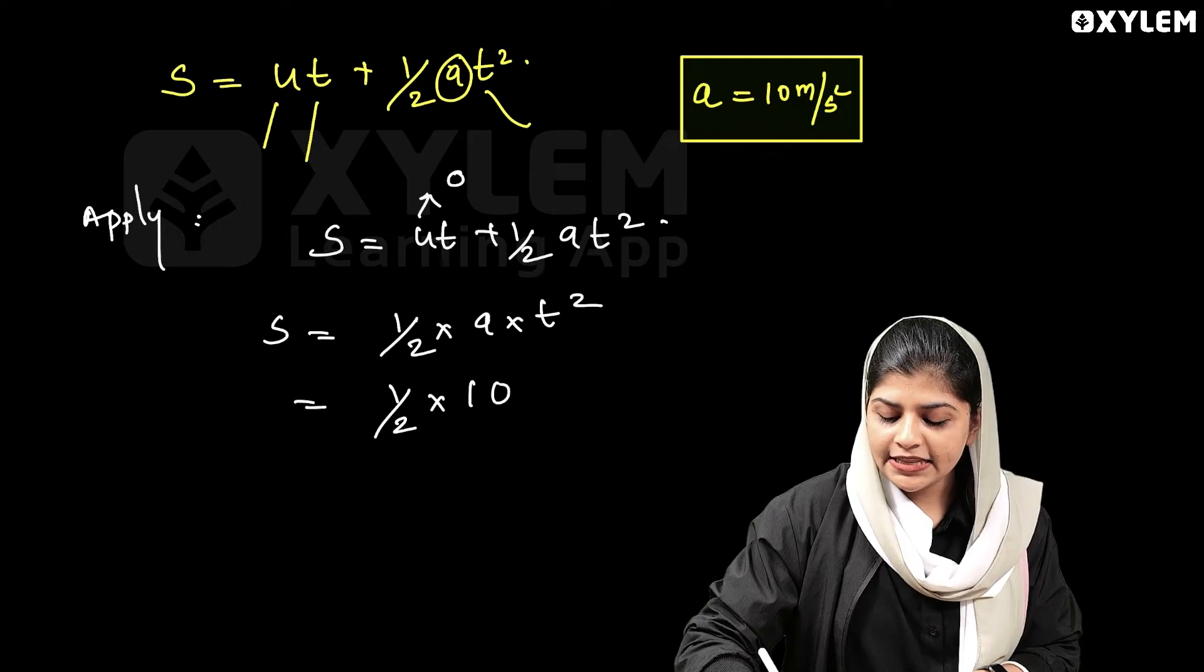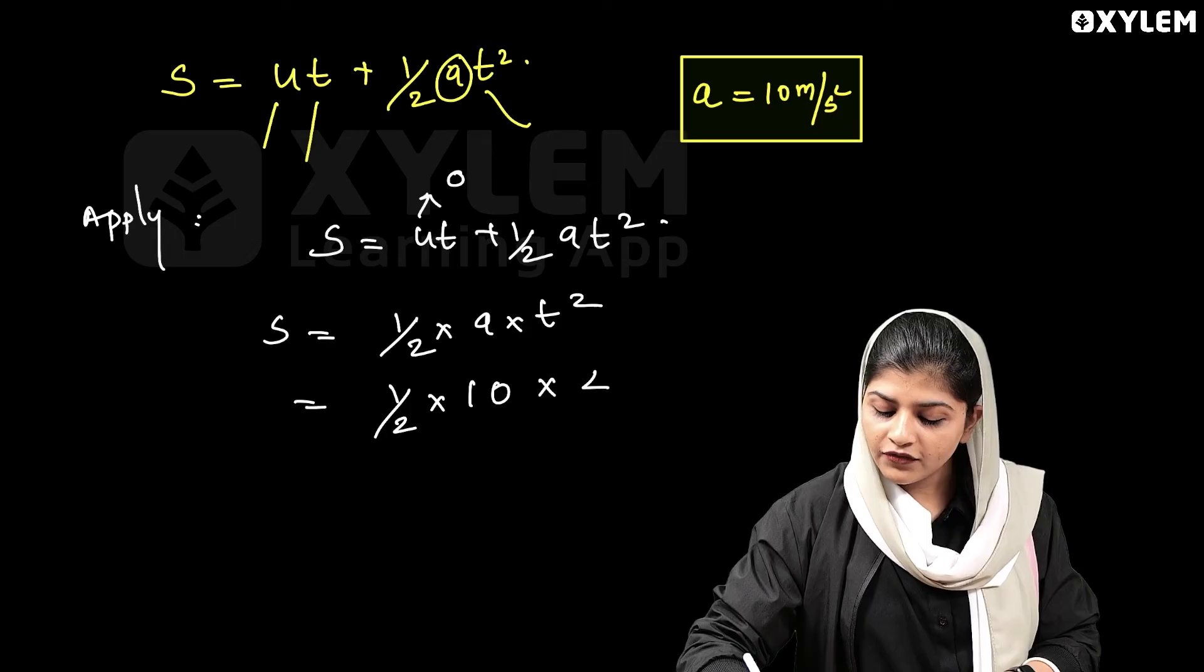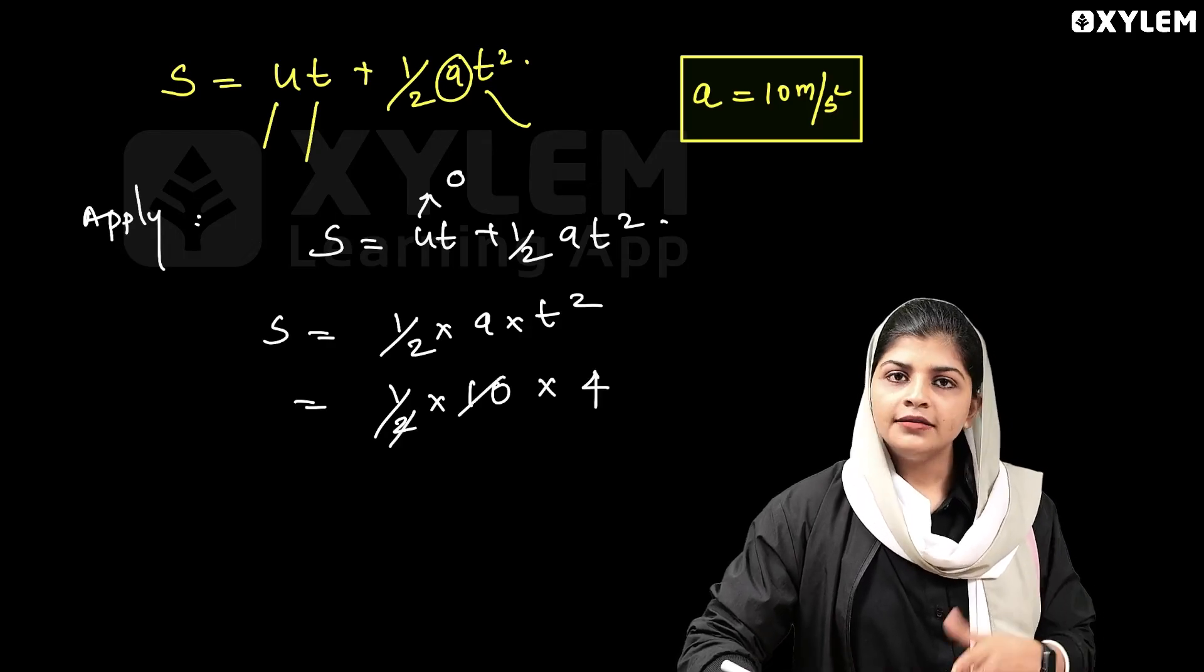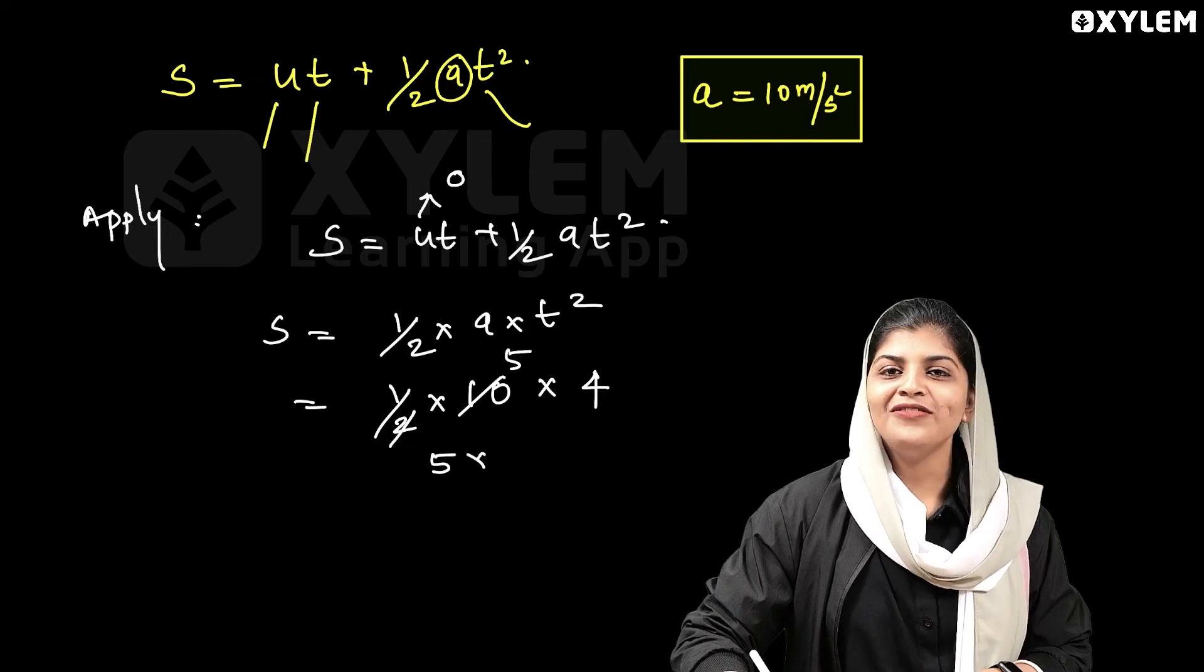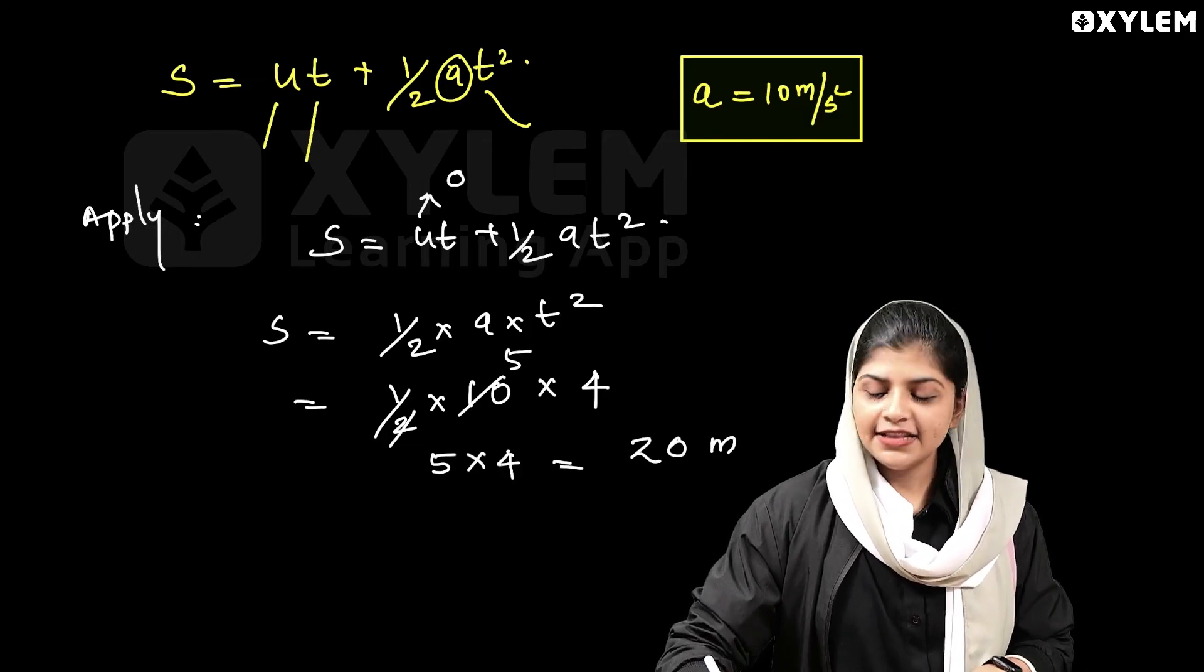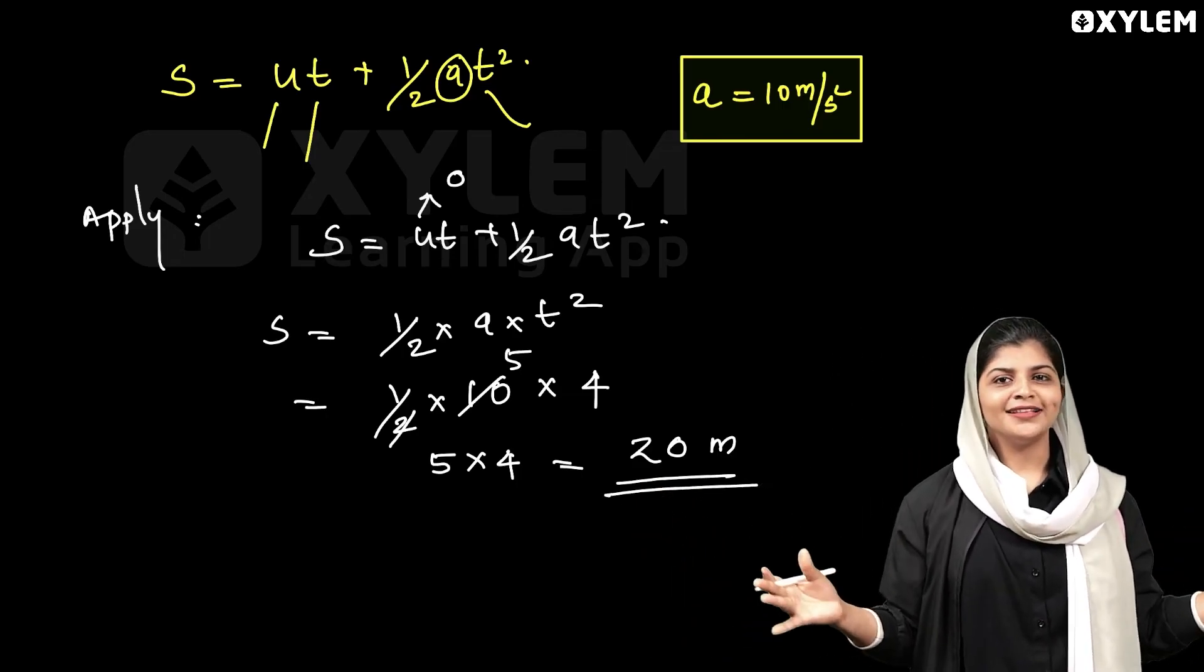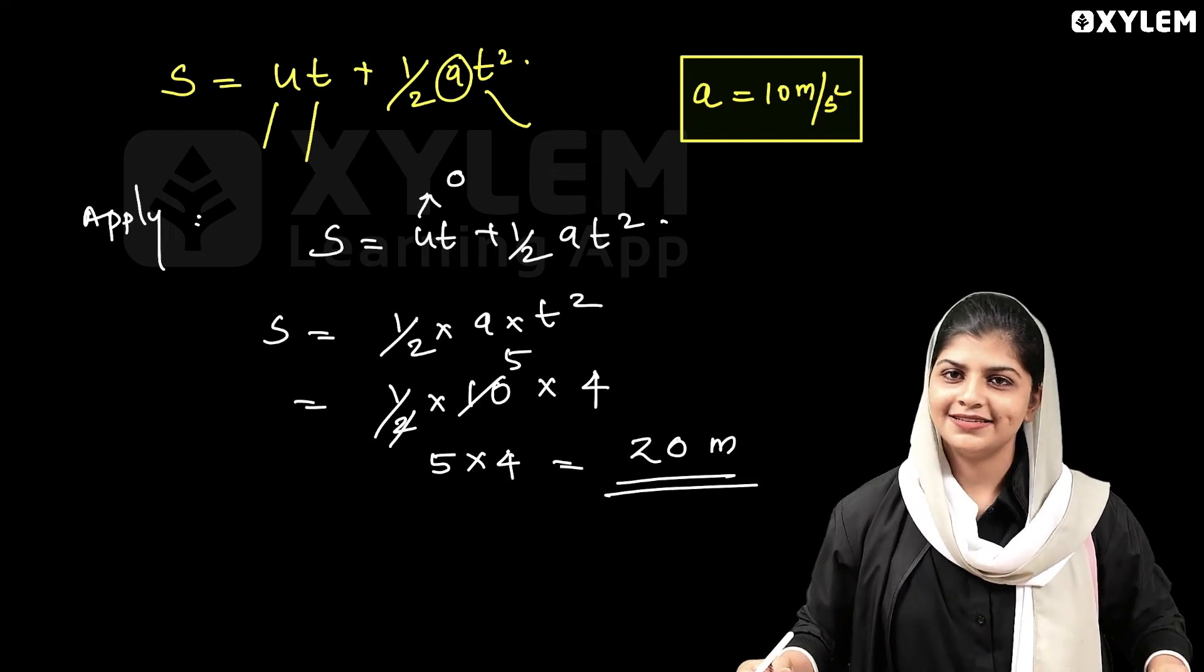That is equal to half into a into t square. 2 square means 4. So half into 10 is 5, then we will get 5 into 4, that is equal to 20 meter. Distance is 20 meter. So we got here 20 meter as the distance.